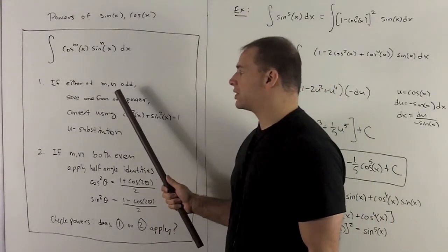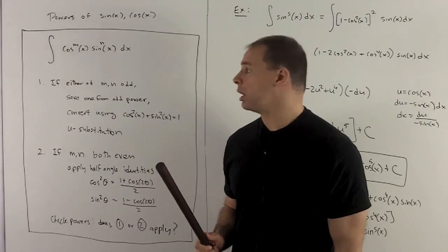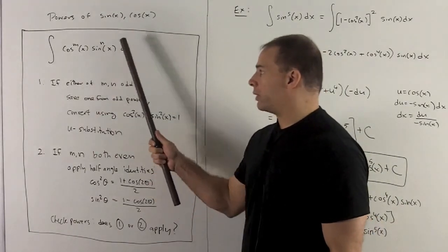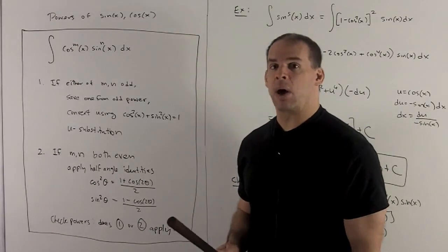In the first case, one of m or n is going to be odd, so let's assume sine has an odd power. The way I'll proceed is I'm going to take one of those sines, set it off to the side. That'll leave me with sine to an even power.